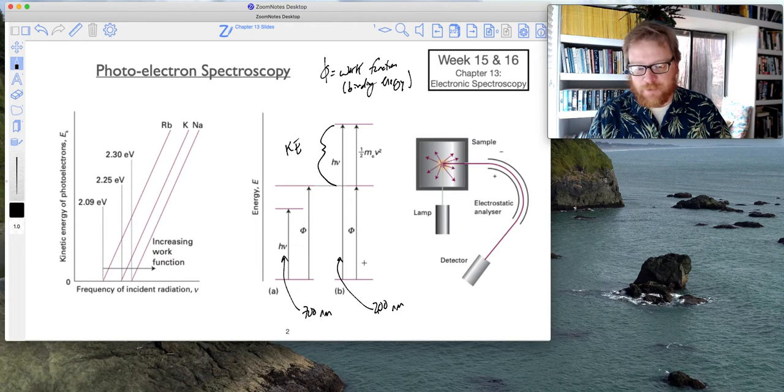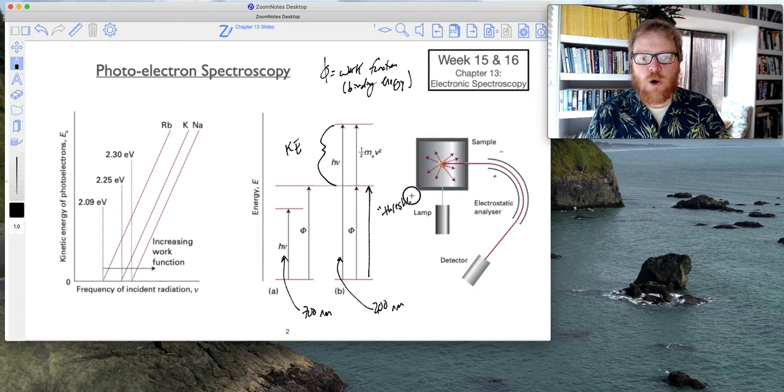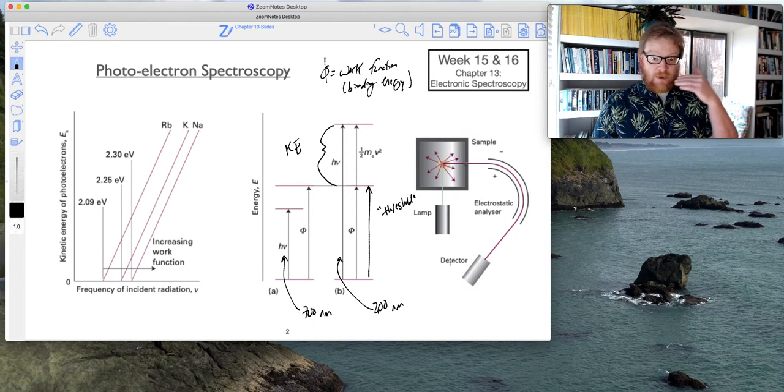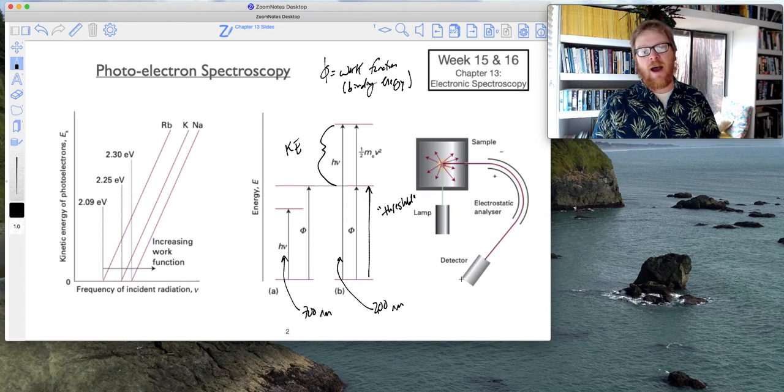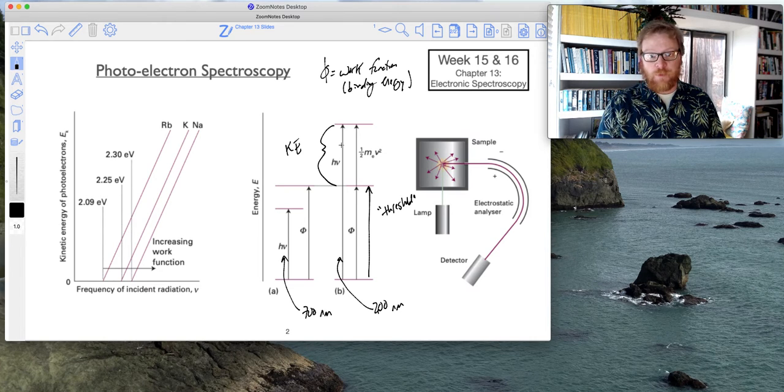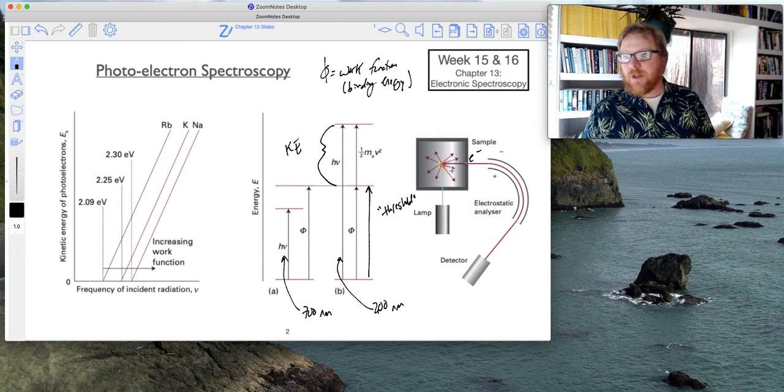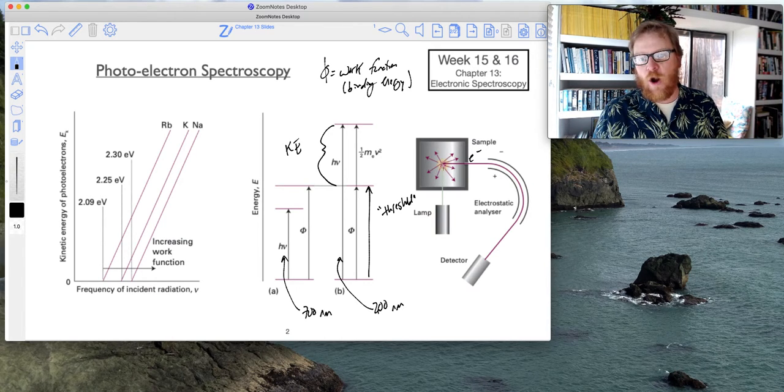If we only use an incident radiation source enough to go right at the work function, that's called threshold ionization. That will not result in the removal of an electron from the surface. But any energy just past that threshold will result in kinetic energy of the electron, which is what's given by this equation here. We're using some lamp and bombarding a sample. If that incident radiation has great enough energy to induce ionization, we'll get all of these photoelectrons.